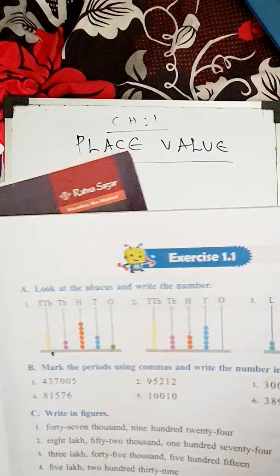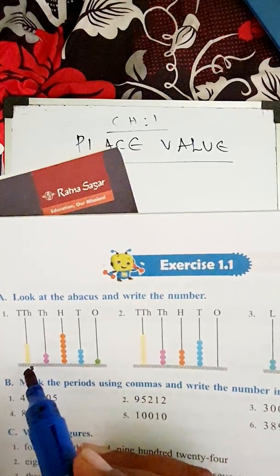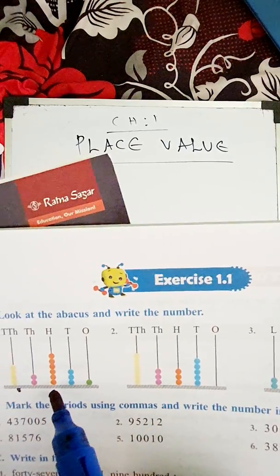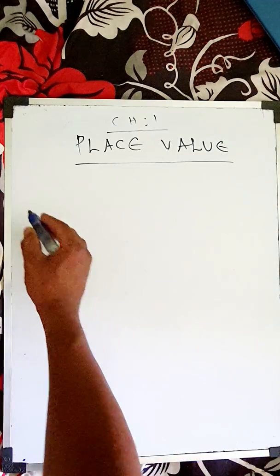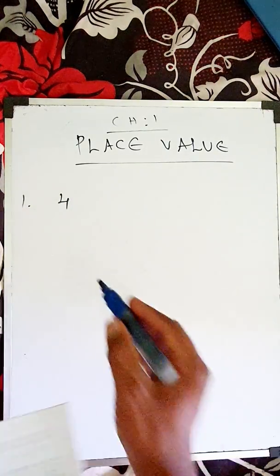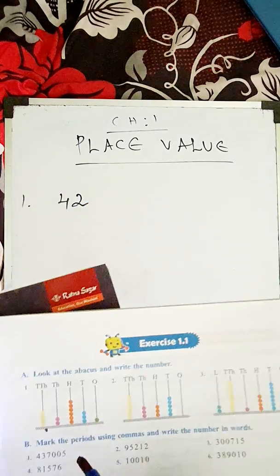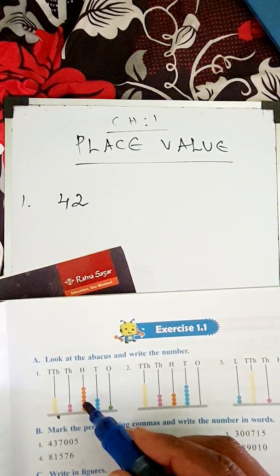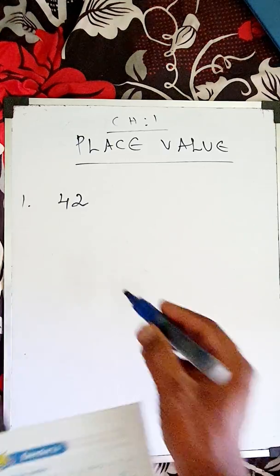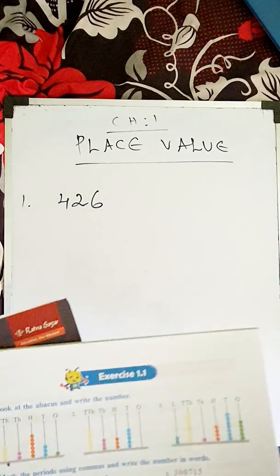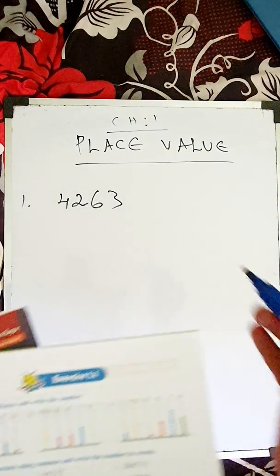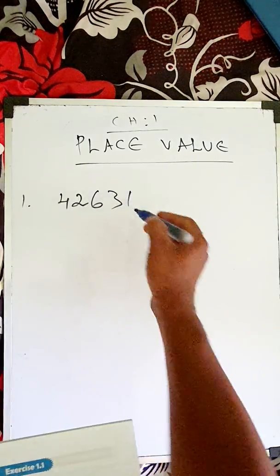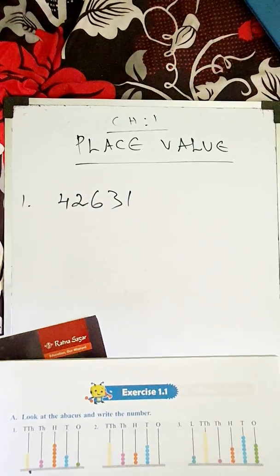Here, one, two, three, four — so the first one is four. And here is two, so the second one is two. Then the next one: one, two, three, four, five, six — so write six here. And the next one: one, two, three — again three. The last one is one.